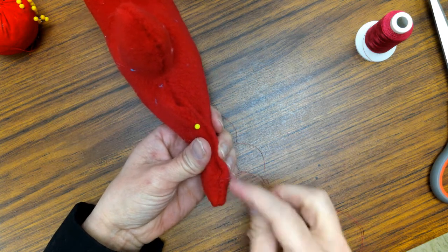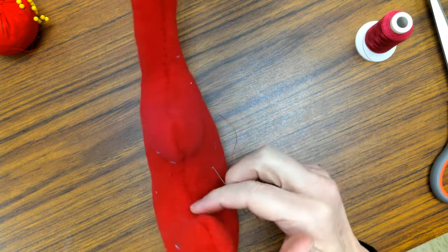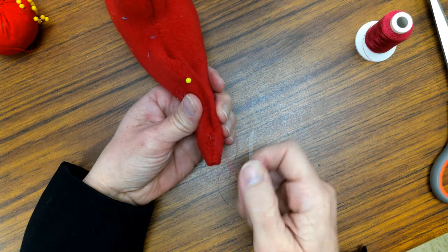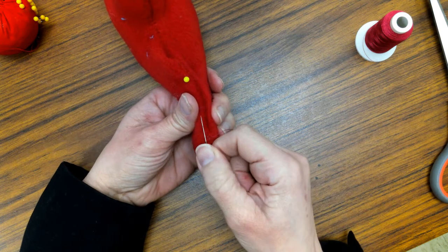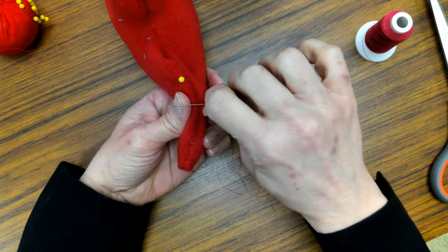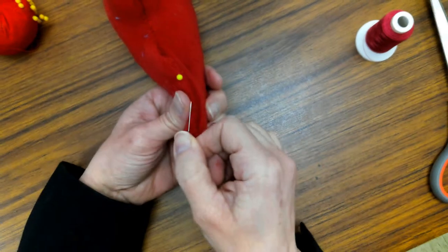And any time you have a hole, if you accidentally have a hole, say you've got one over here, you can use the ladder stitch to sew it up. So how it works is I always sew parallel to the seam. So I'm not going to sew this way, I'm going to sew this way.